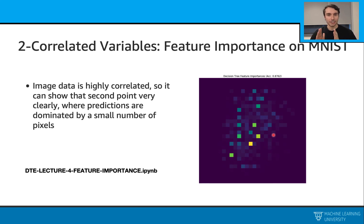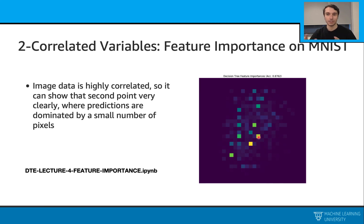When I look at the digit pictures in this MNIST dataset, I know that pixels close to each other should be correlated. So if I see high feature importance for a pixel, I should also see something similar — not exactly the same, but similar — for the surrounding pixels. And I don't see that here. This is coming from the correlated variables limitation: the simple decision tree just goes with one selection and uses it all the time, discarding all the others and creating these types of situations.